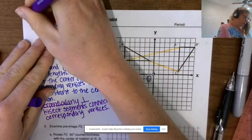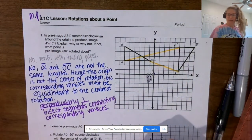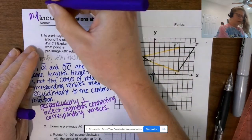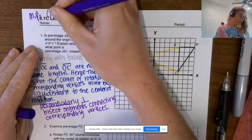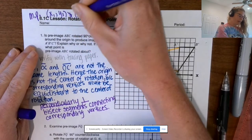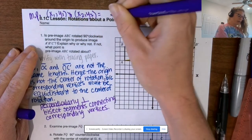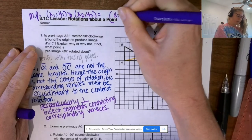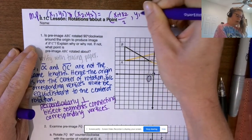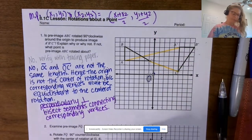The midpoint formula is the average of the x's and y's. The midpoint between coordinates (x₁, y₁) and (x₂, y₂) is ((x₁ + x₂)/2, (y₁ + y₂)/2). Pretty simple.